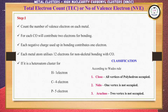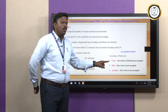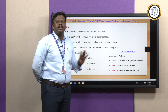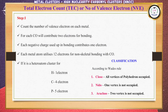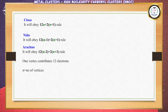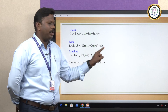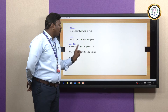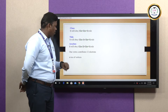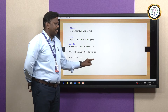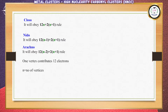According to Wade's rule, the carbonyl clusters are further classified into three types: Closo, Nido, and Arachno. Closo means all the vertices of the polyhedron are occupied. Nido means one vertex is not occupied. Arachno means two vertices are not occupied. The Closo framework clusters obey the 12n + (2n+1) rule. Nido clusters obey the 12(n-1) + (2n+1) rule. Arachno clusters obey the 12(n-2) + 2(n+1) rule, where n is the number of vertices and each vertex contributes 12 electrons.